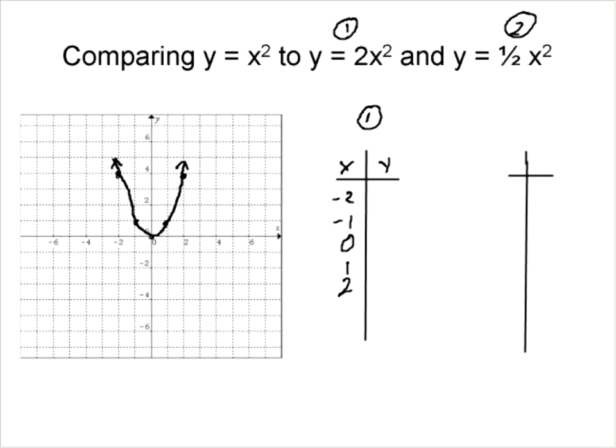And what am I going to get for y when I put in that equation? Well, we can do a little bit of mental math here. Negative 2 squared is 4 times 2 is going to be 8. Negative 1 squared is 1 times 2 is 2. 0 is still going to be at 0, 1 is going to be at 2, and 2 is again going to be at 8.